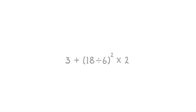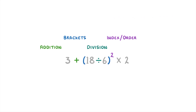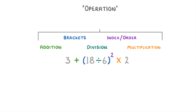If we take a look at a question like this one, there's a lot of stuff going on — there's an addition, some brackets, division, an index or order, and multiplication. We call each of these things an operation, and we have to do them all in a specific order. We can't just start on the left and work our way through.